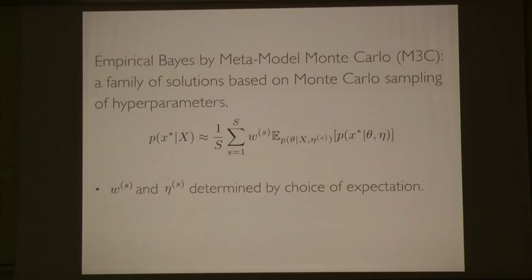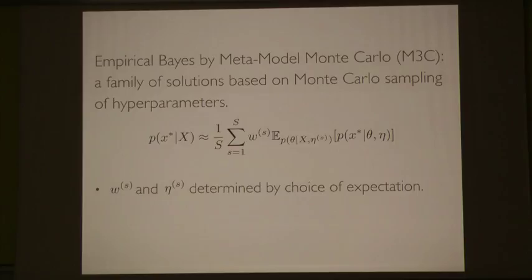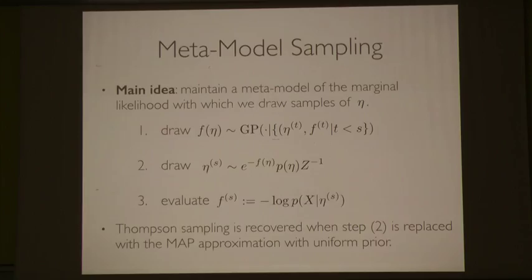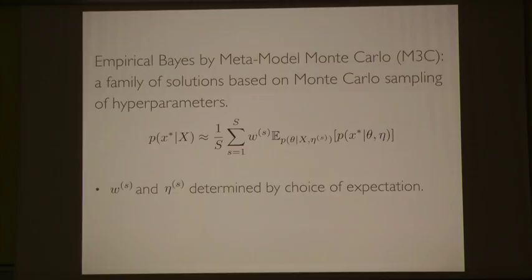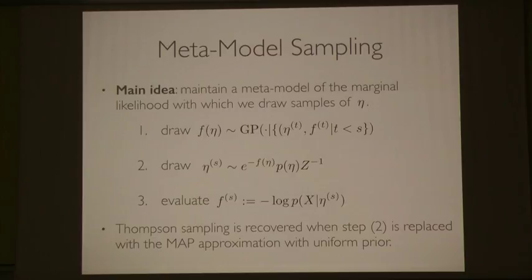Empirical Bayes by Meta-model Monte Carlo, M3C, is a family of solutions based on Monte Carlo sampling of hyperparameters. We draw hyperparameters from some distribution determined by the expectations shown on the previous slide. We then do a Monte Carlo average of those hyperparameters. The weight and the eta are determined by the choice of expectation — details are on the poster and in the paper.